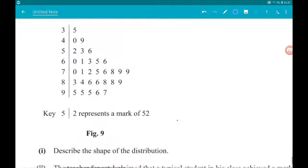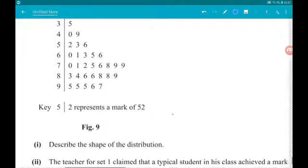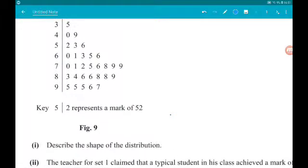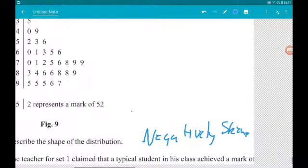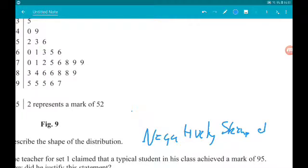Part 1 says describe the shape of the distribution. Okay, so we can see the marks are certainly weighted towards the higher end of marks out of 100. In that case, that means it's a negatively skewed distribution.